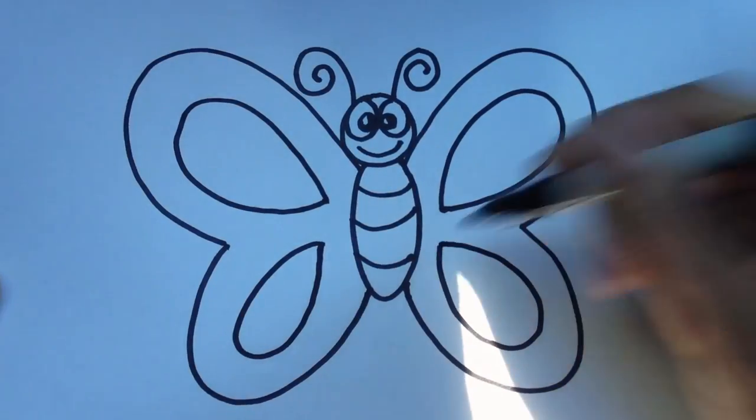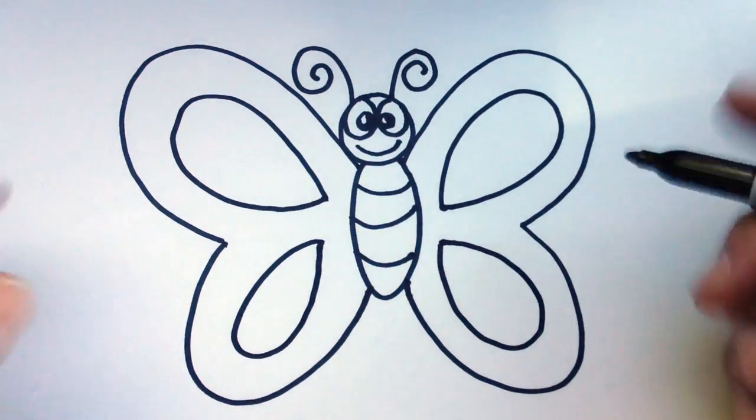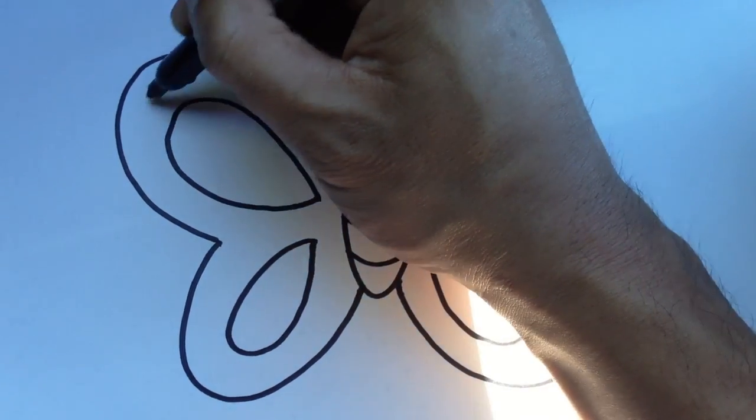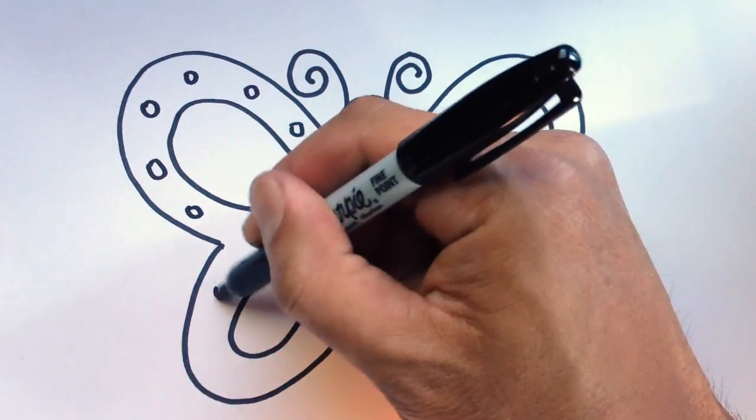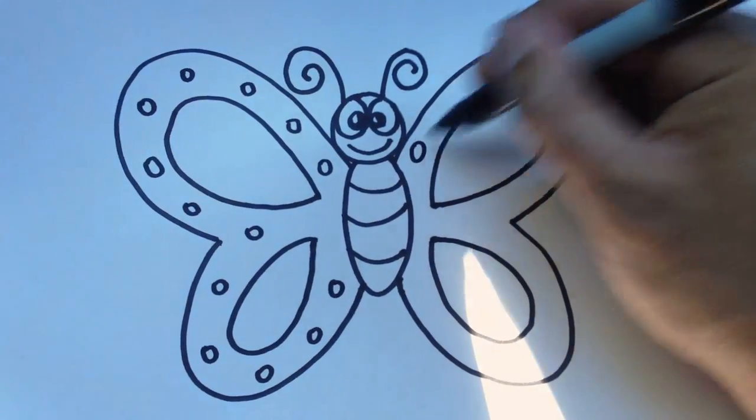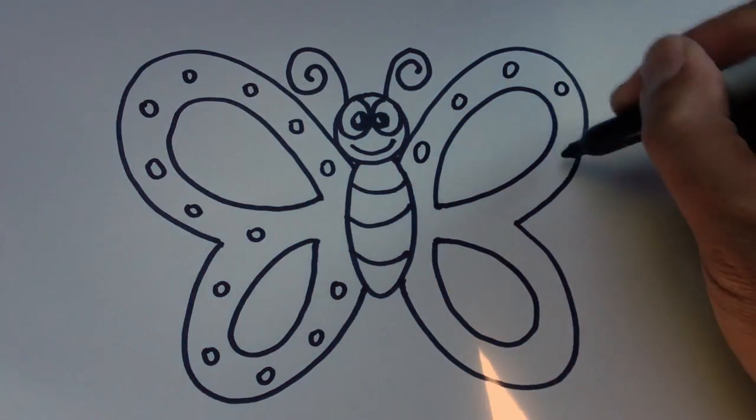Now you can color this if you'd like, it doesn't really matter, or put some more decorations inside. I'm going to go ahead and put some little circles around the outside, just like so. Do the same on the other wing.